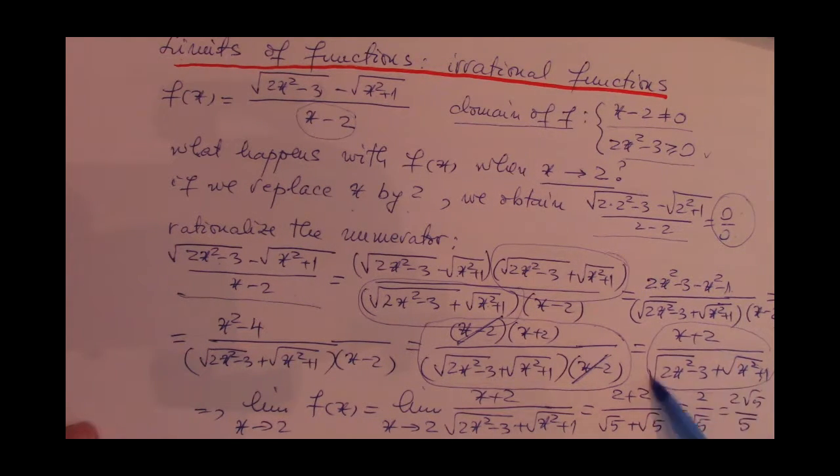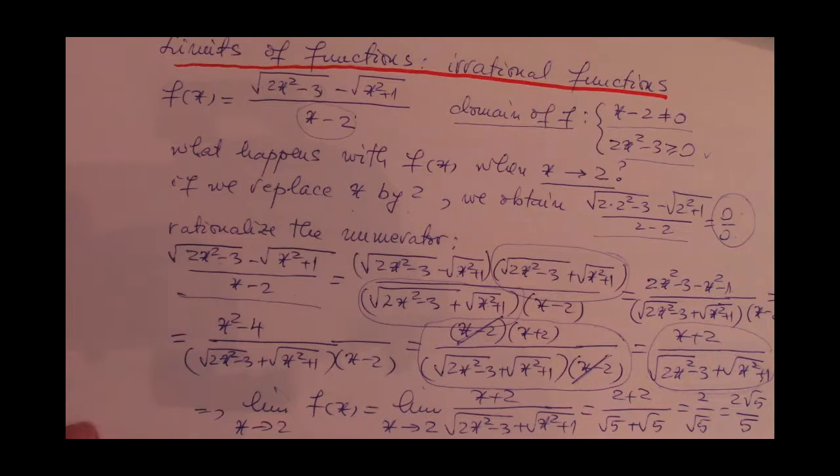It's actually a positive number all the time, so we can actually go ahead and replace and compute the limit when x approaches 2 of f(x). This limit is equal to the limit when x approaches 2 of the fraction x plus 2 over the sum of the square roots.